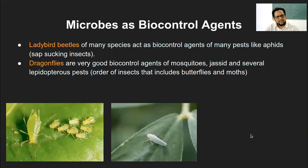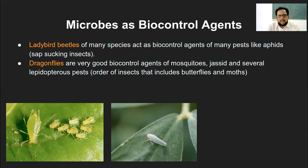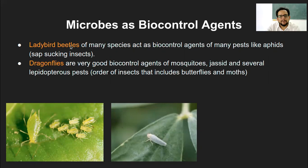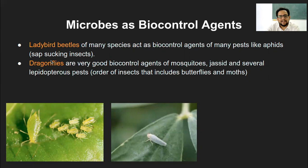There are two specific examples in your syllabus of microbes used as biocontrol agents. First, ladybird beetles - a tiny spotted insect - act as a biocontrol agent for many pests, especially aphids. Aphids are sap-sucking insects. Ladybird beetles in the farm are helpful in stopping infection from aphids by eating them.